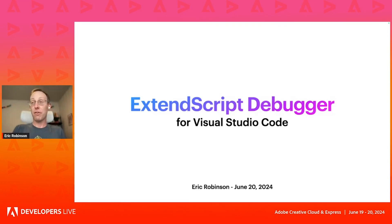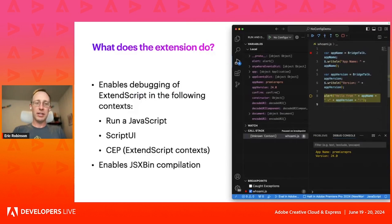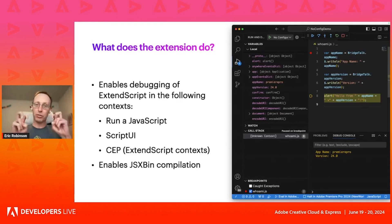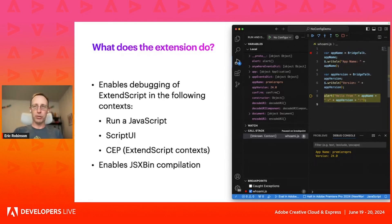This is the ExtendScript Debugger for Visual Studio Code. It is an extension for Visual Studio Code that enables you to debug ExtendScript. It supports all of the standard contexts that ExtendScript runs in — that means if you run a JavaScript from some of the host applications (Photoshop has that), Script UI contexts which are supported in some host applications, and CEP extensions, which is the Common Extensibility Platform — not UXP, but CEP.